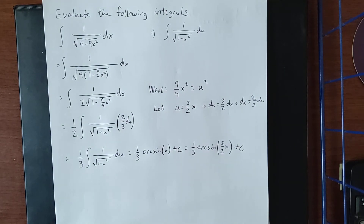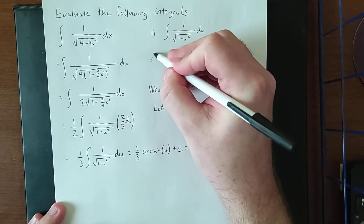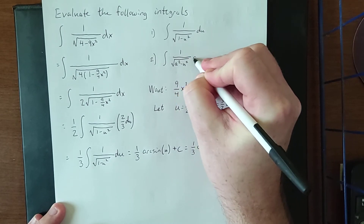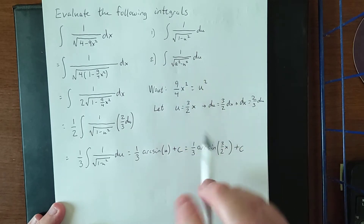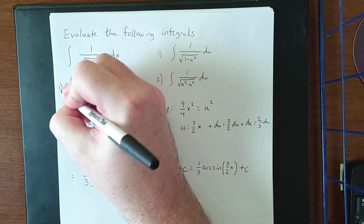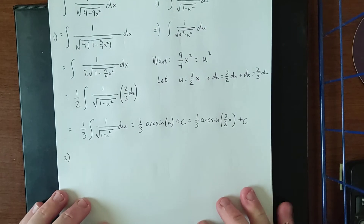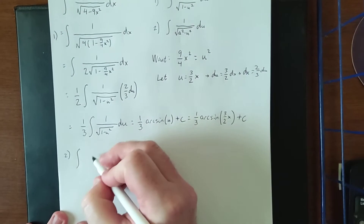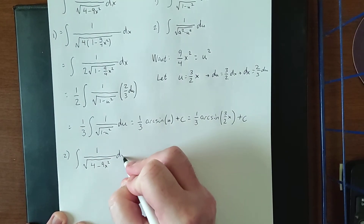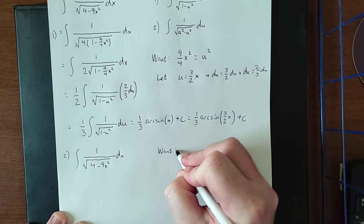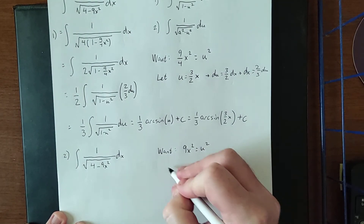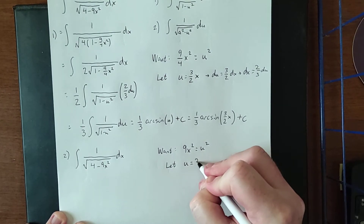That was approach number 1. The alternative approach — approach number 2 — involves getting the integral into the form 1 over the square root of a squared minus u squared. Starting again with 1 over the square root of 4 minus 9x squared dx, in this strategy the 4 stays as is, and we want 9x squared to become u squared. We do so by letting u equal 3x.